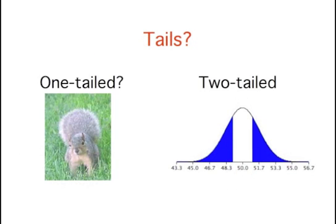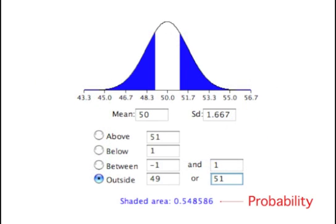When we're talking about tails, remember that we mean the ends of the distribution. Again, we can use the normal distribution calculator to work out the two-tailed probability. As you can see, the probability is 0.548, which, as you might have guessed, is twice the probability of 0.274 shown earlier.